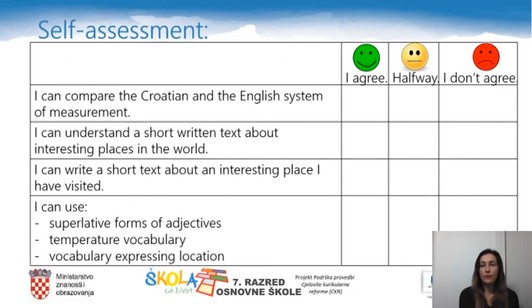How do you feel about today's lesson? Are you happy, sad, or somewhere in between? Rate the following statements: I can compare the Croatian and English system of measurement. I can understand a short written text about interesting places in the world. I can write a short text about an interesting place I have visited. I can use superlative forms of adjectives, temperature vocabulary, and vocabulary expressing location.